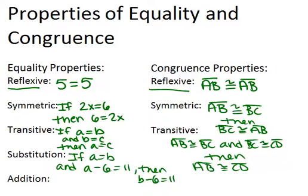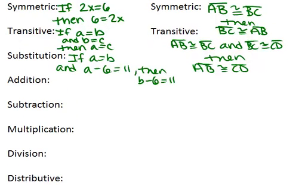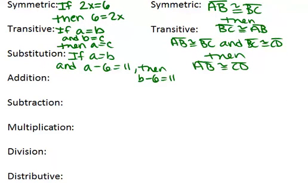The next four properties are all just properties of addition, subtraction, multiplication, and division — basic operations. The addition property basically says that you can add the same thing to both sides of the equation. For example, if A plus 7 equals B, then you could also say that A plus 7 plus C equals B plus C. You can add C to both sides, and you're still good.